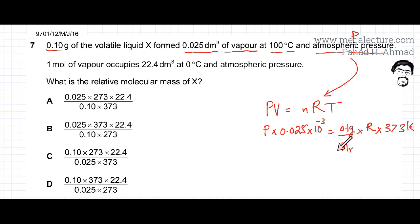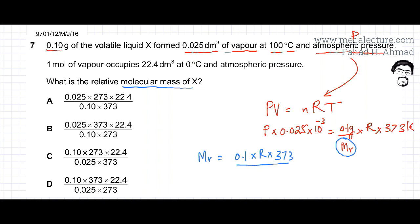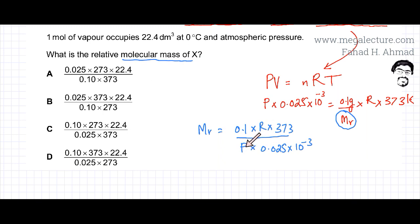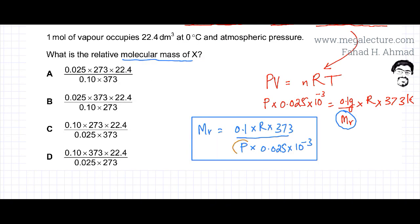We need to make Mr the subject of the equation. Rearranging all terms gives: Mr equals 0.1 multiplied by R multiplied by 373, divided by P multiplied by 0.025 times 10 to the power minus 3. However, the value of P is still unknown, so this expression for Mr is not yet complete — we need to find P first.